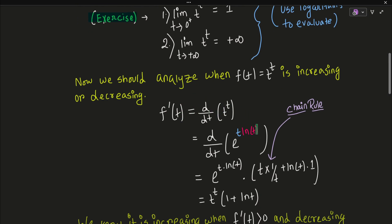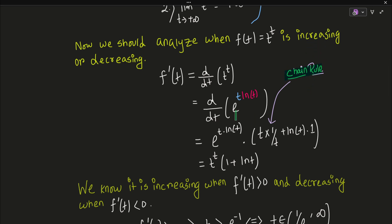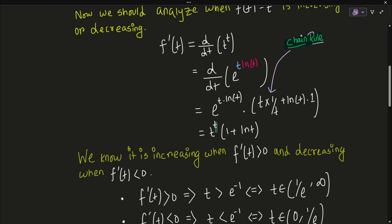To find the derivative of t^t, recall that x^x = e^(x ln x). So t^t = e^(t ln t), and applying the chain rule gives f'(t) = t^t · (1 + ln t). To determine if the function is increasing we check f'(t) > 0, and for decreasing we check f'(t) < 0.